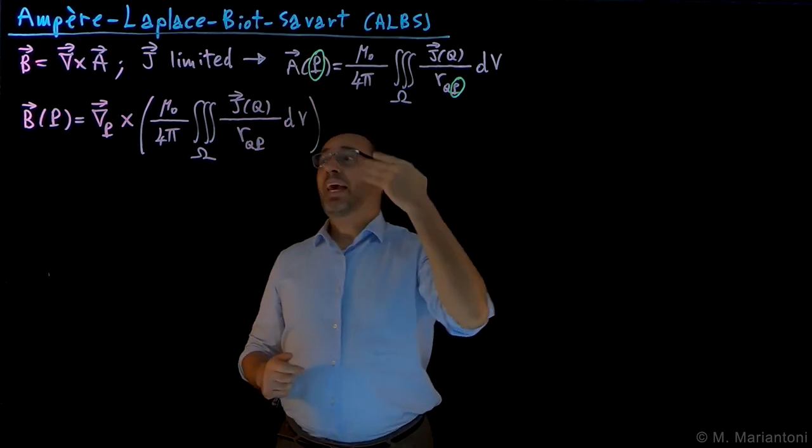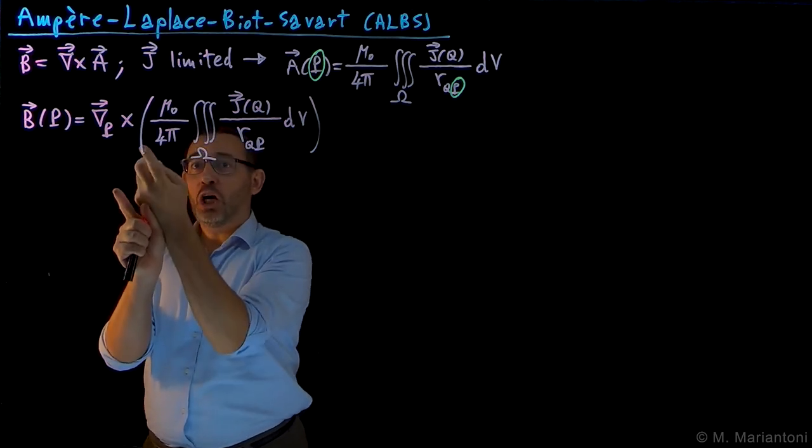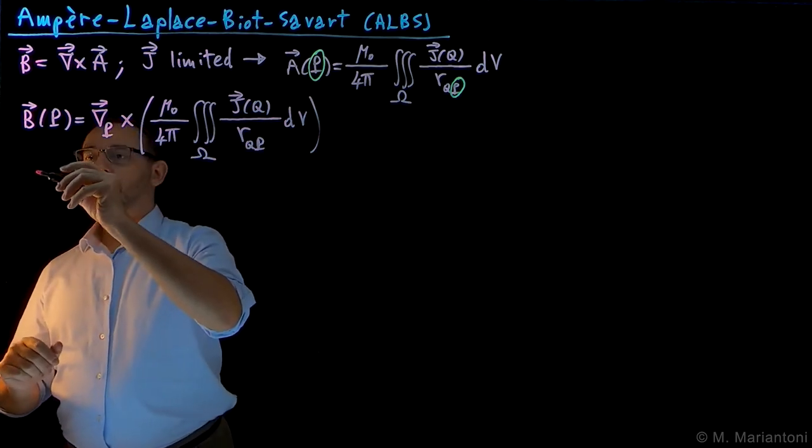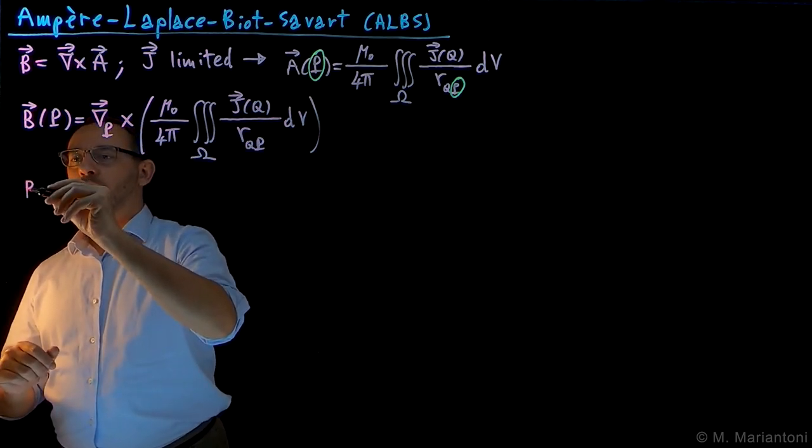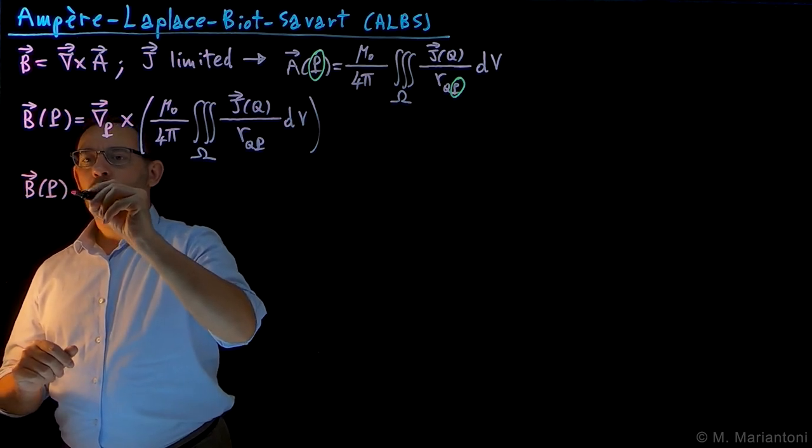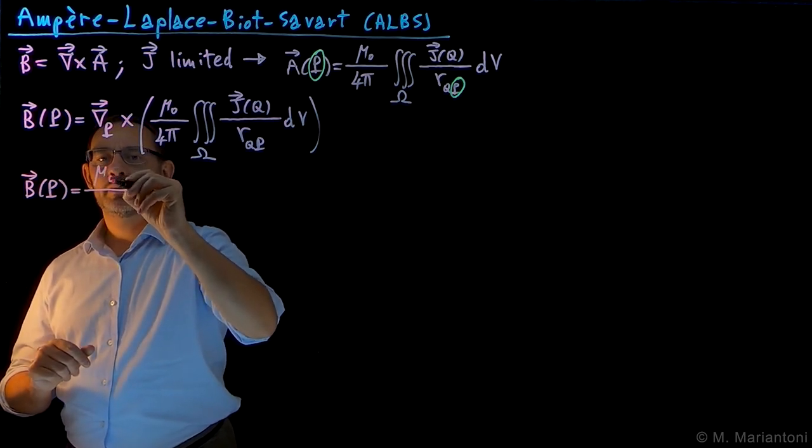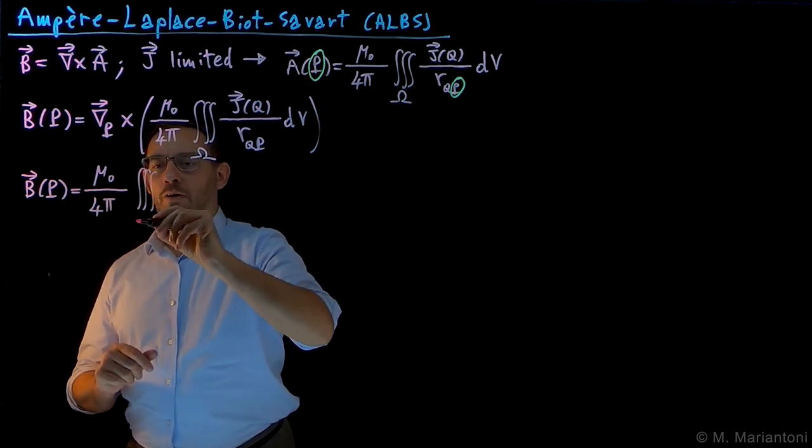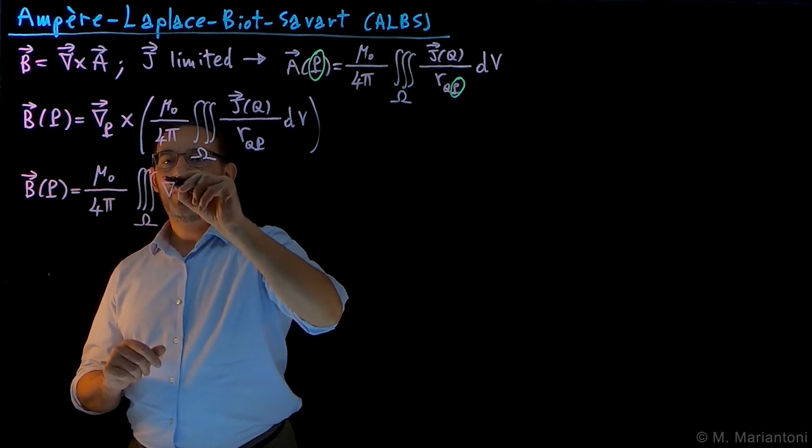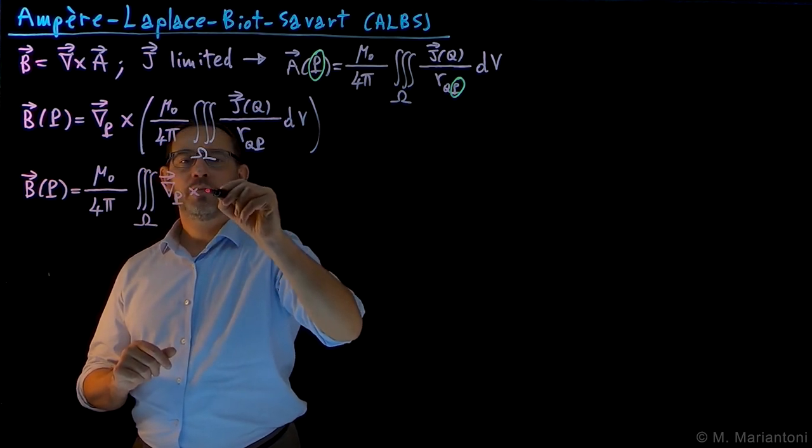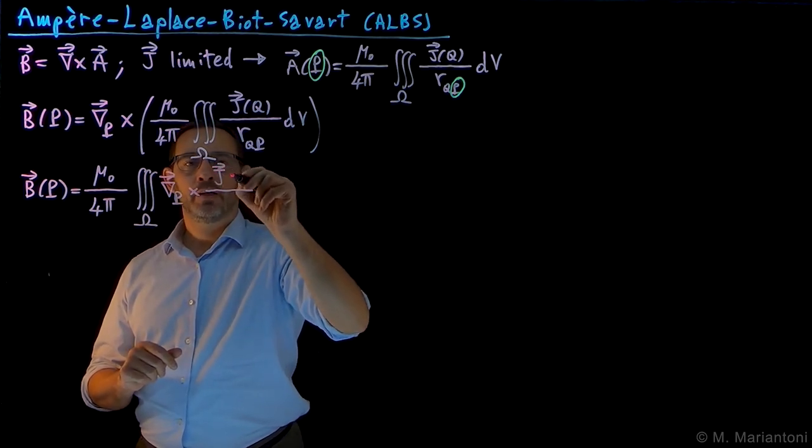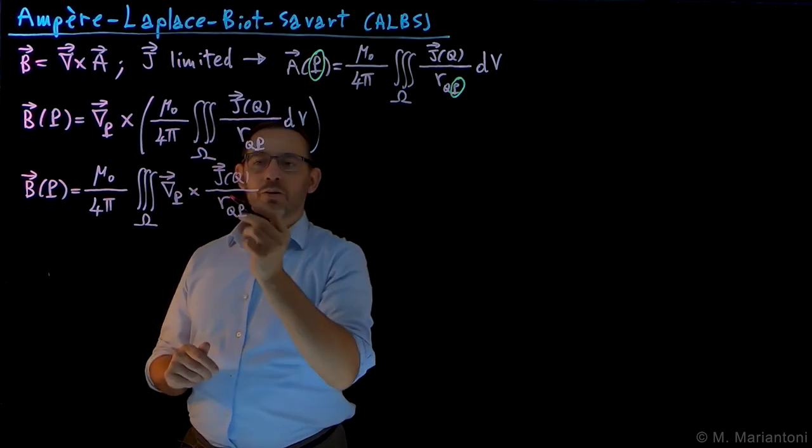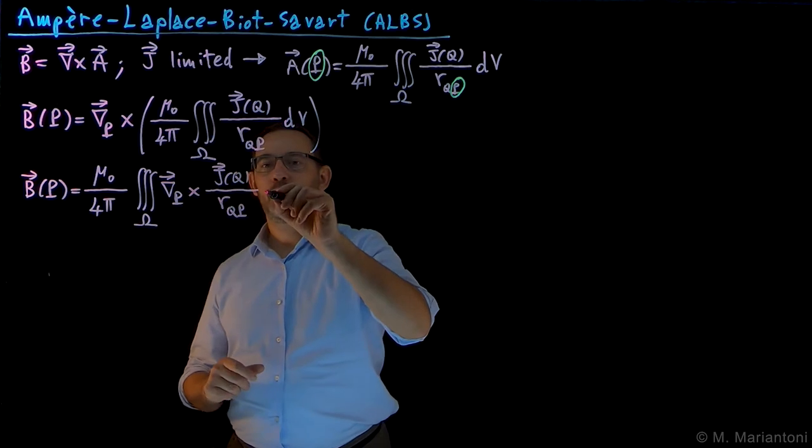Now we can always bring this curl inside the integral because these are all linear expressions. So we can rewrite eventually this expression as B at point capital P equal μ₀ over 4π, which are just constants, a volume integral in our combined region capital Ω of the curl with respect to point capital P of the ratio of two functions J, which is a vector at Q, divided by scalar R_QP. Note that the result of this curl, of course, as such could be a vector, and so this is dV.